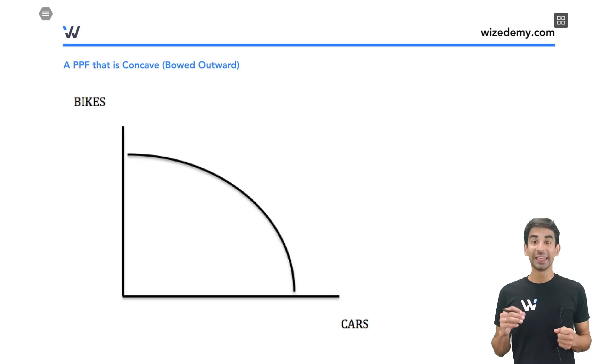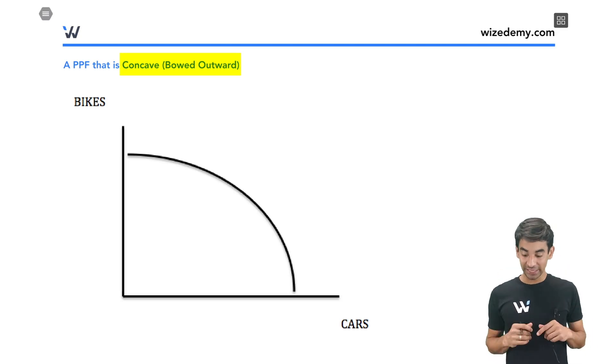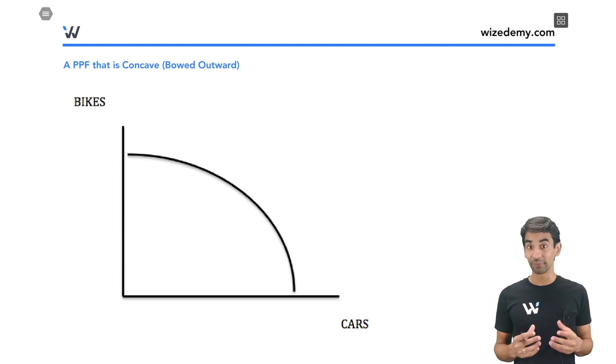Let's see this on the diagram. A PPF that is concave or that is also called bowed outwards, means that it looks like this. And we have two products, bikes and cars. This is showing us the max amount of bikes and cars that we can make if we were using everything fully efficiently. All of our land, our workers, our machines, what's the maximum amount that we could produce?